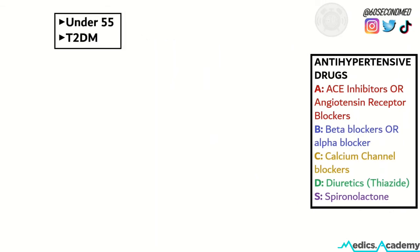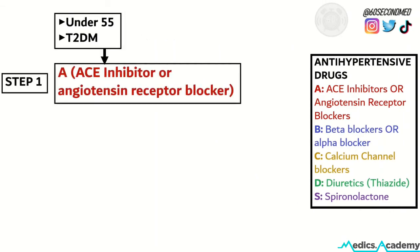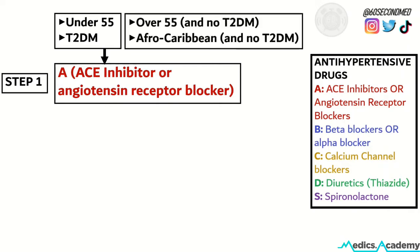If a patient is under 55 or they have type 2 diabetes, the first drug to start them on is an ACE inhibitor. If they can't tolerate an ACE inhibitor due to side effects, then it's an angiotensin receptor blocker. If the patient is over 55 or Afro-Caribbean and they do not have type 2 diabetes, the drug to start them on is a calcium channel blocker.